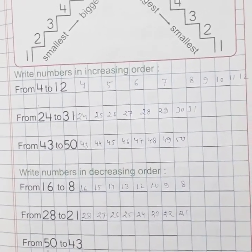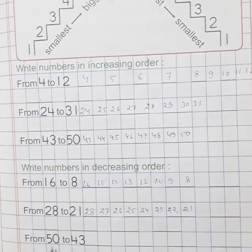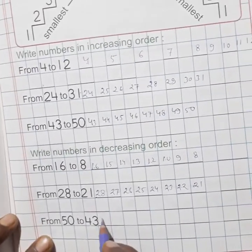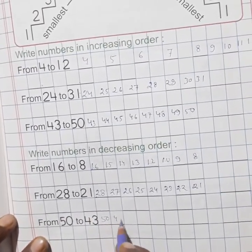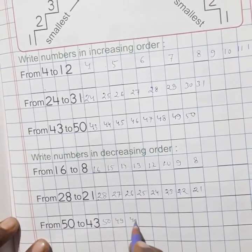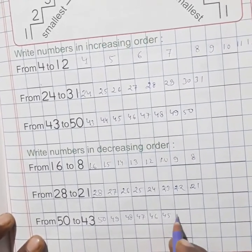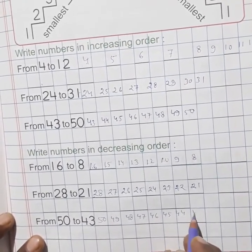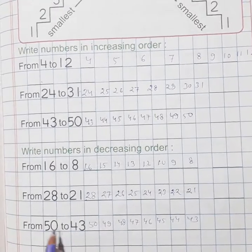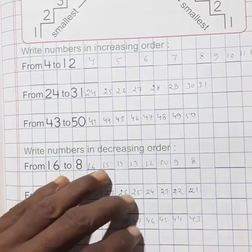Next, 52 to 43. Here, write this type: 50, 49, 48, 47, 46, 45, 44, 43. This is decreasing order.